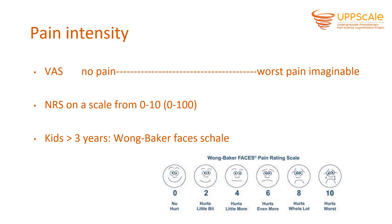Going back to the case, you want to measure pain intensity. You can use a VAS with anchors of no pain and worst pain imaginable, scoring from 0 to 100 or 0 to 10. A numerical rating scale is often found easier for patients to understand, and can also be done on a scale from 0 to 10 or 0 to 100. For kids slightly older than 3 years, you can use the Wong-Baker Faces Scale, which is also understood by the elderly.